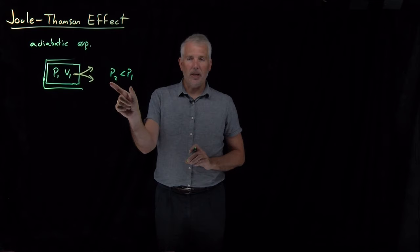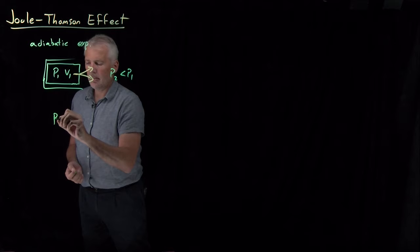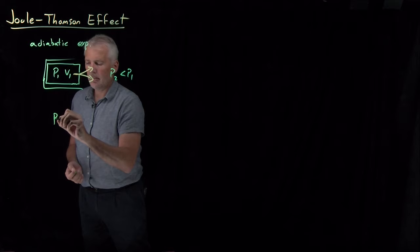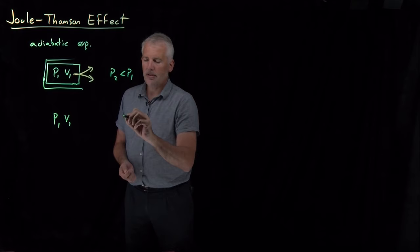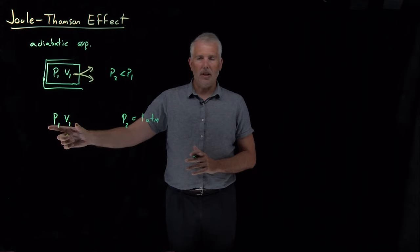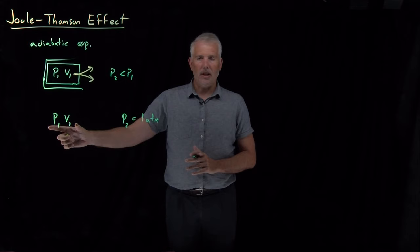What I'd rather do from a practical point of view is, again, let's say I have a gas at some initial P1 and V1. I want to have the outside gas be at room temperature. So I want to be able to compress the gas that I'm going to allow to expand and allow it to expand into a one atmosphere surrounding. So that's already a little bit more convenient.